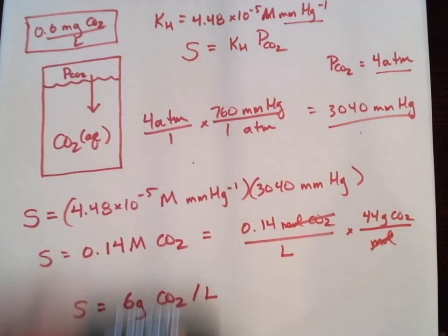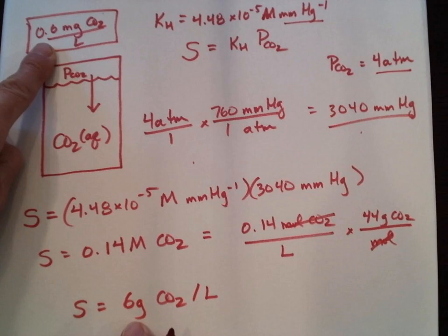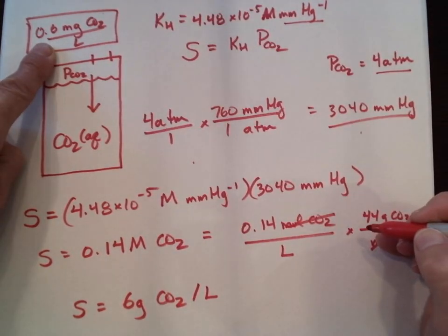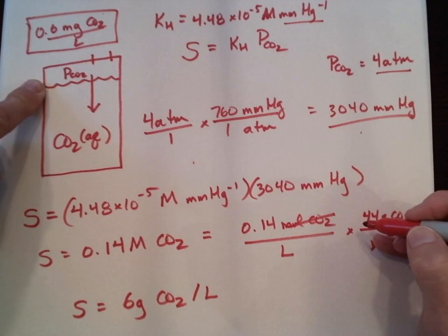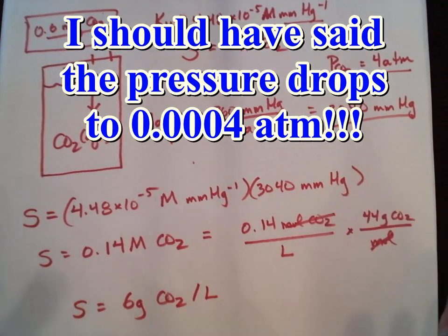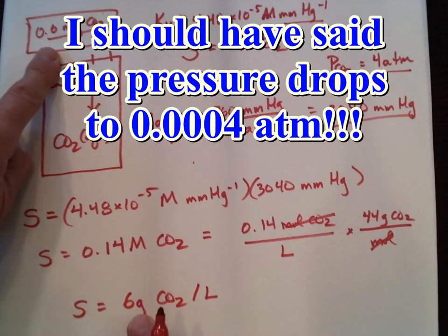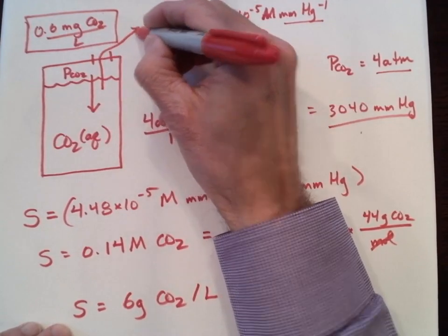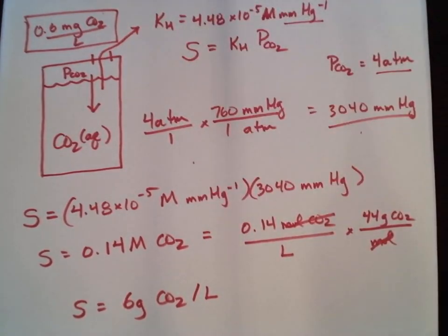That's a huge difference — a major difference. When you open a can of soda pop, the pressure drops to air pressure, and slowly the carbon dioxide leaks out — almost all of it. You go from 6 grams down to about 0.6 milligrams per liter. So essentially all 6 grams of carbon dioxide are going to escape from the can over time.